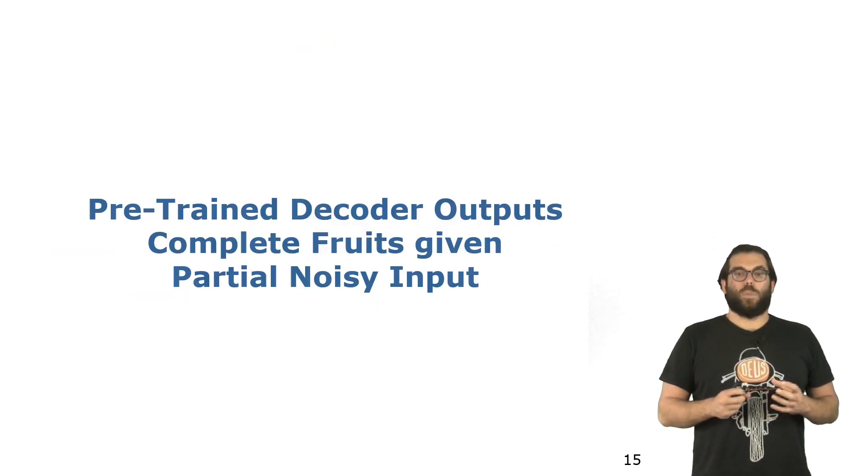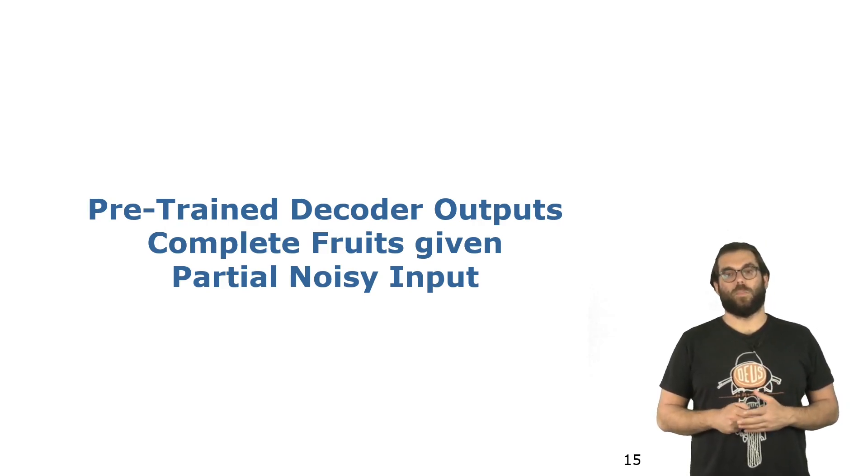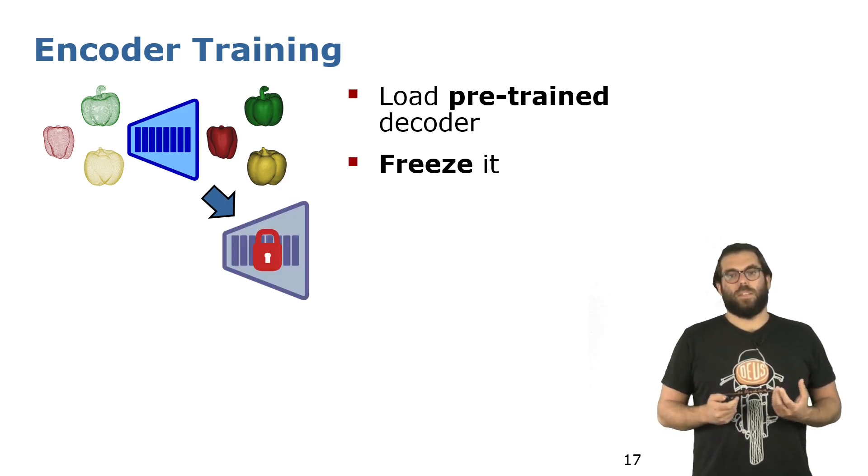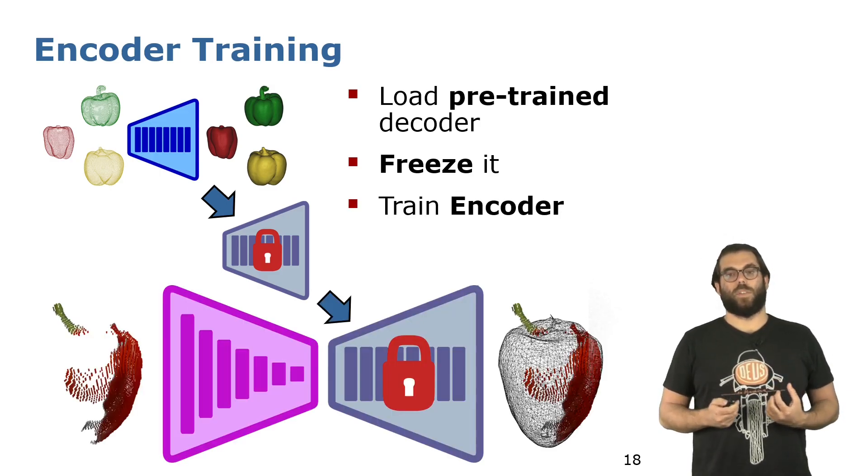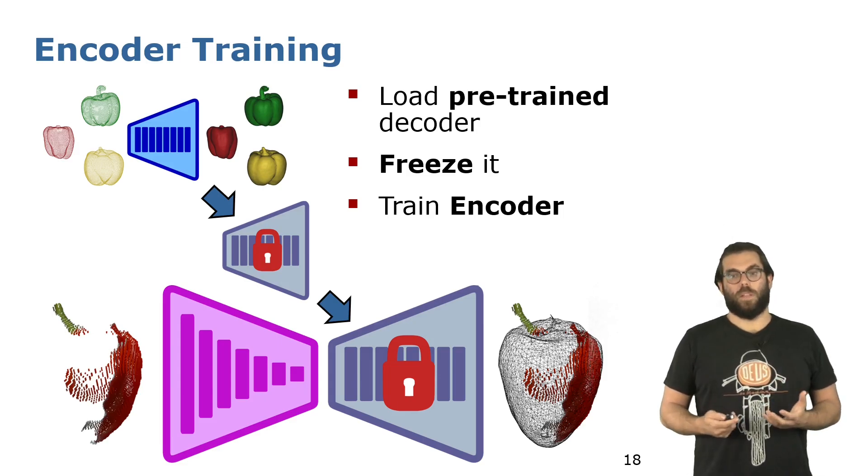We've taken a step forward and asked how we can use this pre-trained decoder to complete partial fruits, partial observations as they come from a robot. So after training our decoder, we freeze it, so that we know the output will be a complete 3D model, and then we start training our encoder. The input is a partial RGBD scan, and the output is a complete 3D mesh.